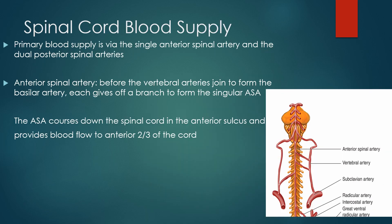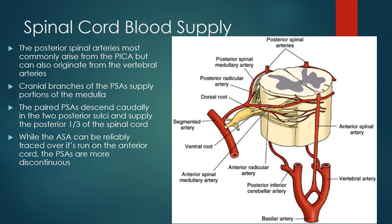Blood supply to the spinal cord is primarily from the single anterior spinal artery and the dual posterior spinal arteries. Before the vertebral arteries join to form the basilar artery, each gives off a branch to form the singular anterior spinal artery, which courses down the cord in the anterior sulcus and provides blood flow to the anterior two-thirds of the cord. The posterior spinal arteries most commonly arise from the posterior inferior cerebellar artery but can also originate from the vertebral arteries. They descend caudally in the two posterior sulci and supply the posterior one-third of the spinal cord.